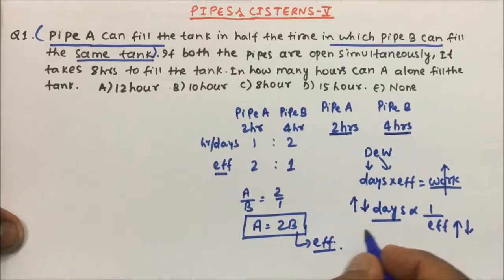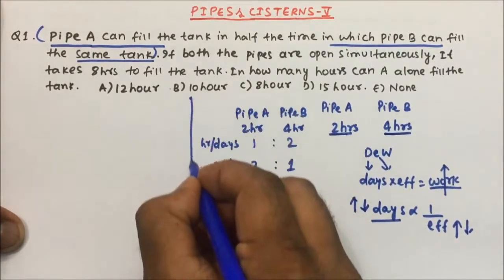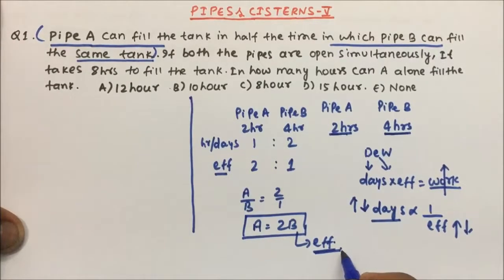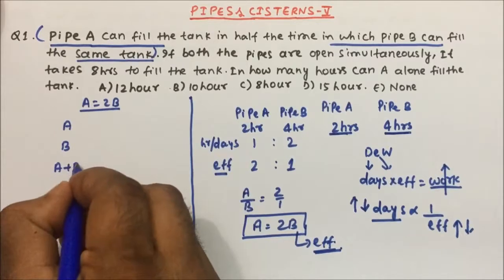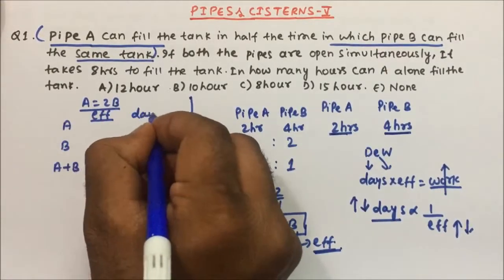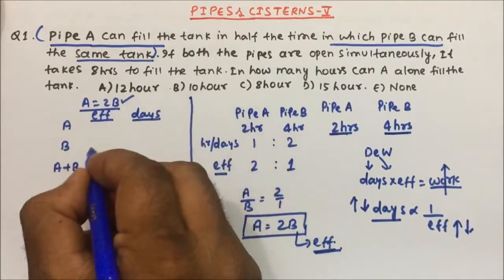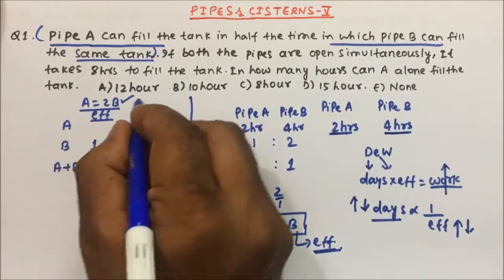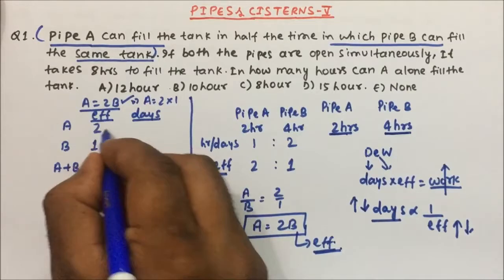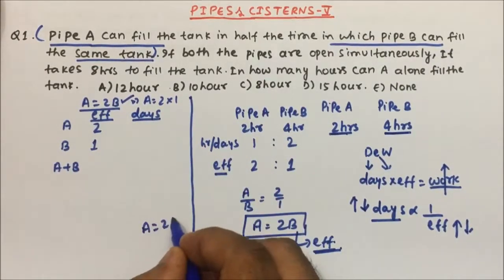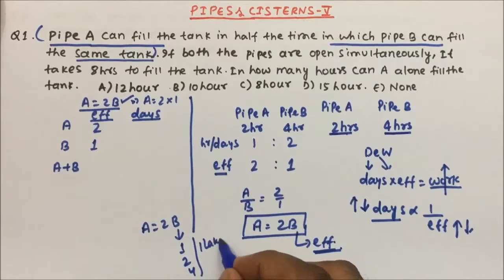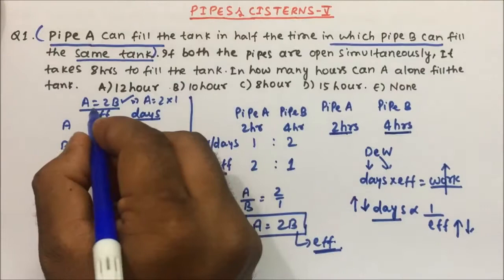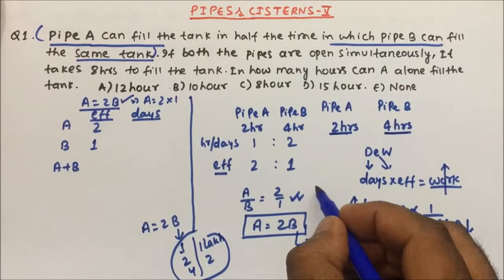We calculate efficiency because in any question of Time and Work or Pipes and Cisterns, we use efficiency to solve questions quickly and easily. We now have the equation A = 2B in terms of efficiency. We write a table for A, B, and A+B with efficiency and days columns. Assume efficiency of B is 1, then A becomes 2×1 = 2. You can assume any value for B — 1, 2, 4 — and your answer will be the same because efficiency is in ratio form.